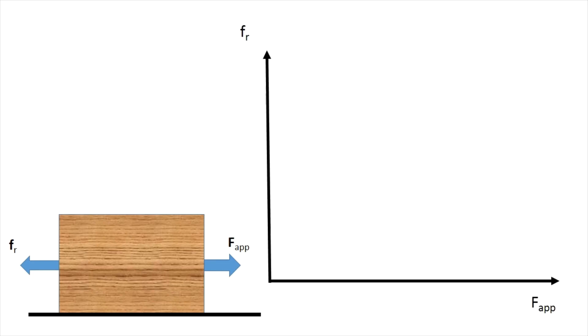Now, if you consider a graph between the force applied and the frictional force, then as the force applied increases from zero, up to a certain point, the frictional force will be equal to the applied force. And the maximum static frictional force is given by mu s into n.